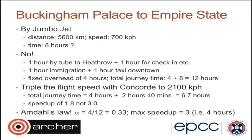If we think of alpha — the serial fraction of our journey — as 4/12, which is 0.33, the maximum possible speed-up is 1/alpha = 3. This means the maximum speed-up would give a total journey time of 4 hours, i.e., if the flight time were zero and all we had was the overhead time in the airports. So this is a nice illustration of Amdahl's law.